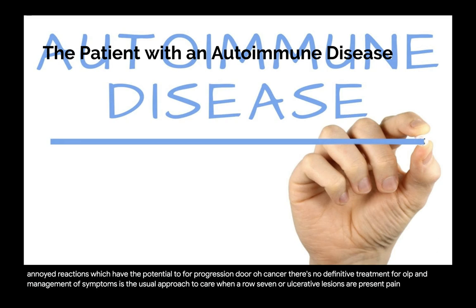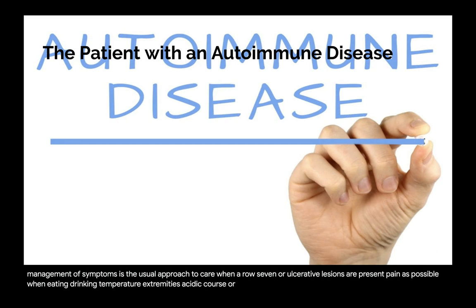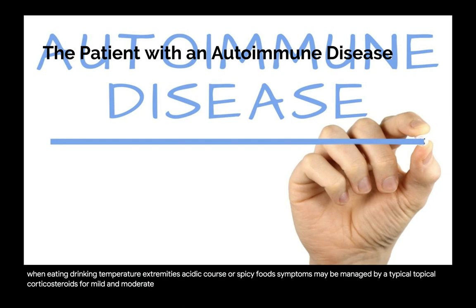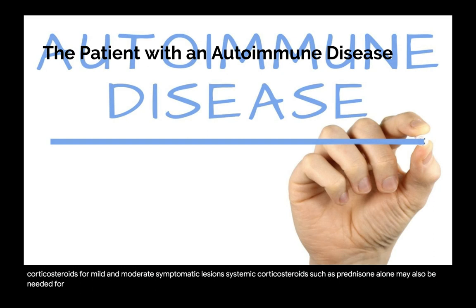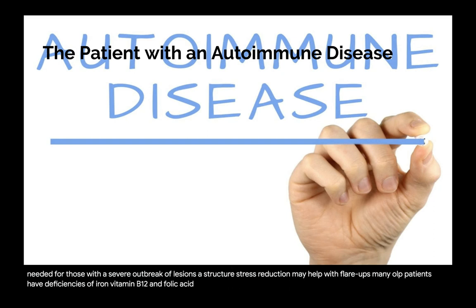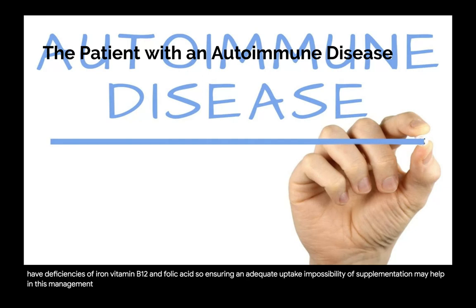When erosive or ulcerative lesions are present, pain is possible when eating, drinking, or encountering temperature extremes, acidic, coarse, or spicy foods. Symptoms may be managed with topical corticosteroids for mild to moderate lesions; systemic corticosteroids such as prednisolone may be needed for severe outbreaks. A healthy lifestyle with a well-balanced diet, exercise, and stress reduction may help. Many OLP patients have deficiencies of iron, vitamin B12, and folic acid, so adequate uptake and possible supplementation may help. Avoid oral risk factors such as betel quid, cigarette smoking, and alcohol.